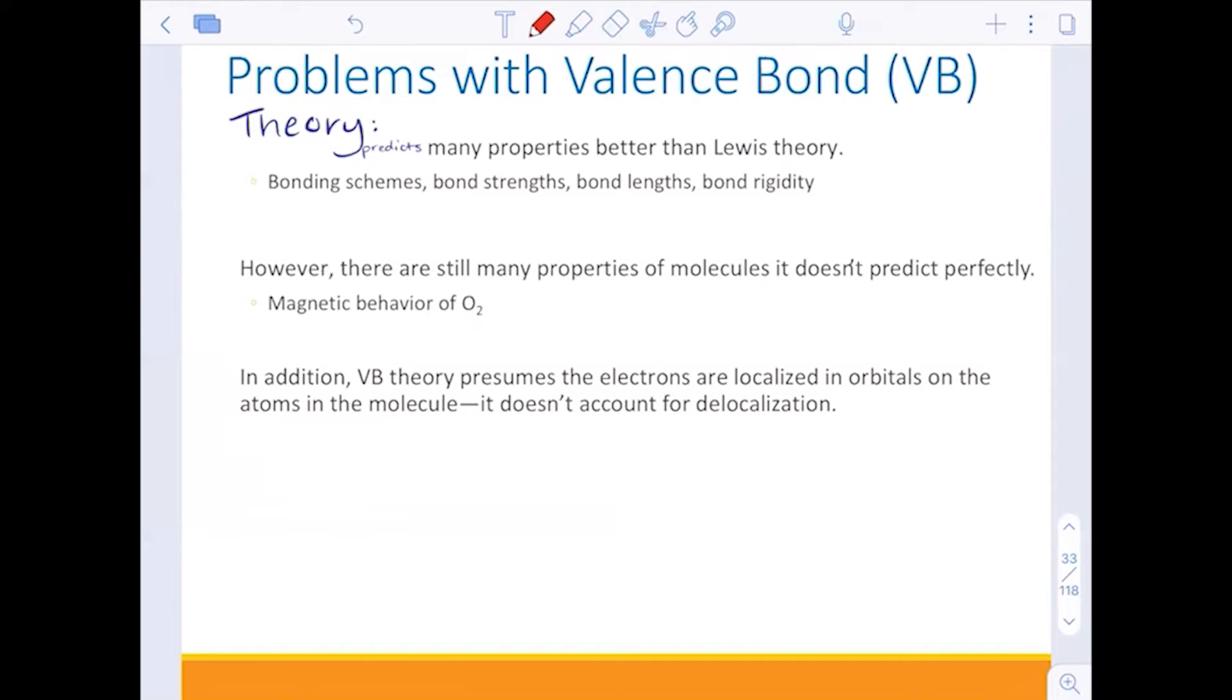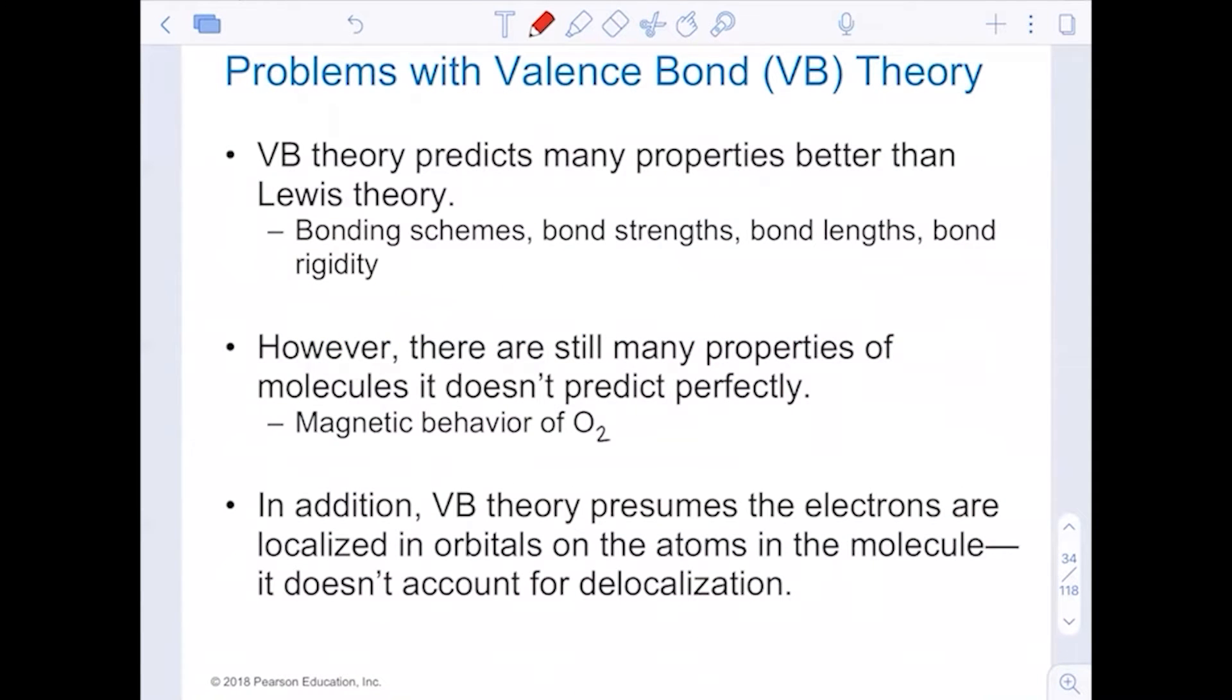However, it still doesn't predict perfectly the magnetic behavior of oxygen diatomic. And so in addition, valence bond theory presumes our electrons are localized in the orbitals, and it doesn't account for delocalization, specifically resonance.